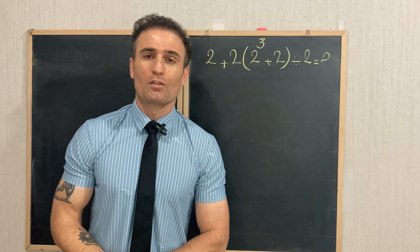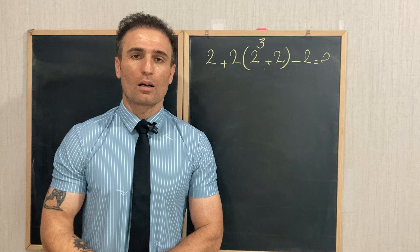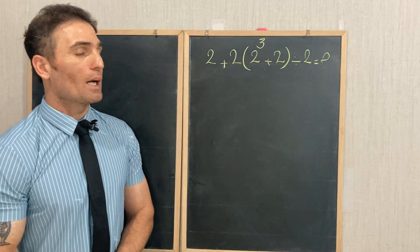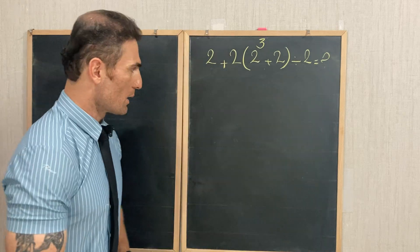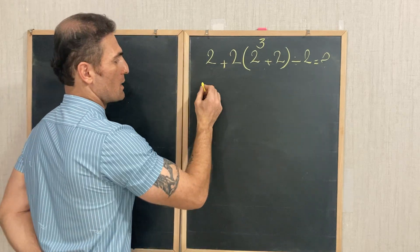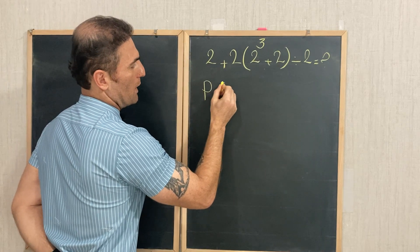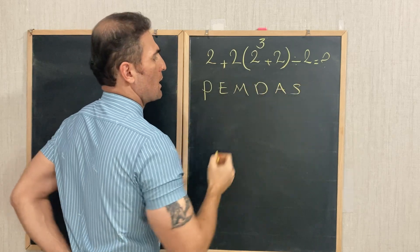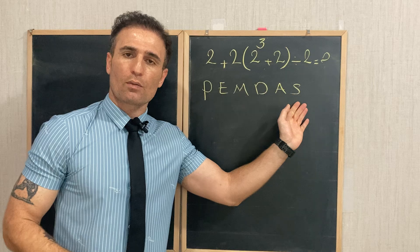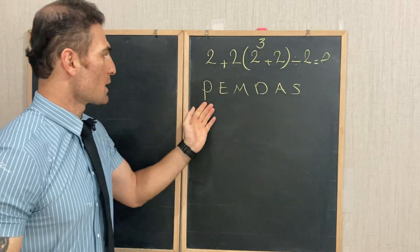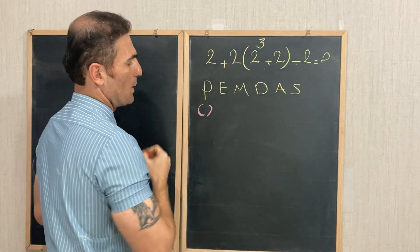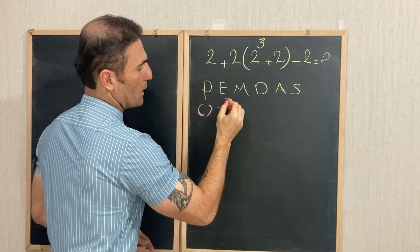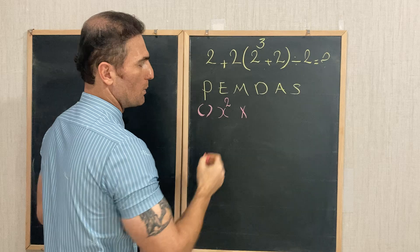To solve this type of question we need to follow a set of rules called the order of operations. The order of operations can be remembered by PEMDAS. Each letter stands for a different operation — P stands for Parenthesis, E stands for Exponent, M stands for Multiplication.